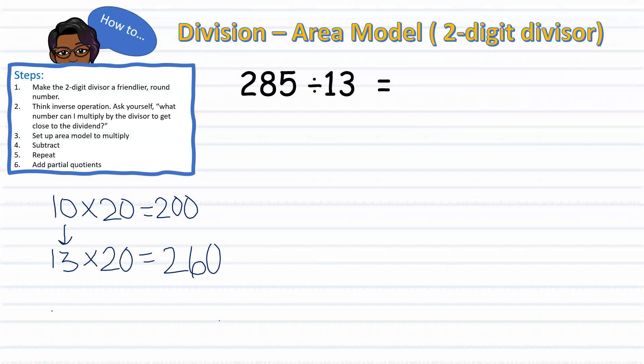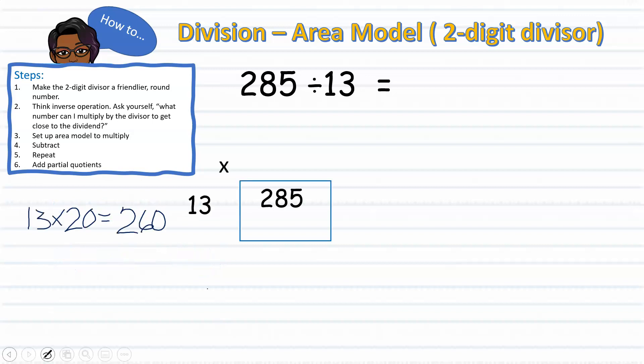Multiplying 13 times 20, I get a product of 260. I will keep that in mind as I set up my area model. Now that I have my area model set up, I can multiply 13 times 20, which is 260, and I'm ready to subtract. Subtracting 260 from 285, leaving me with 25.